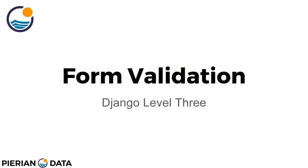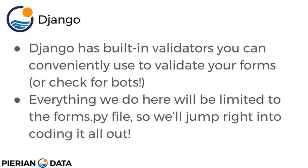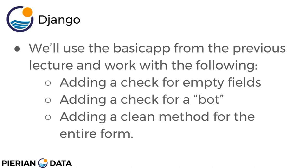Hello everyone and welcome to the form validation lecture. We'll be discussing hidden fields and how we can use them for custom field validation. The way our form is currently set up, it's actually pretty open not only to users who might give bad information, but also potentially to bots — automated scripting programs that come in and fill junk information into your form. Django has built-in validators you can use to validate forms against both user misbehavior and bots, and everything we do here will be limited to the forms.py file.